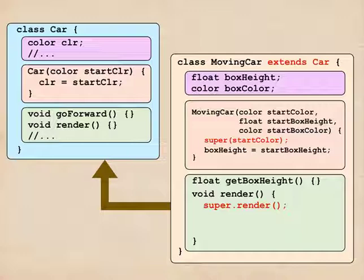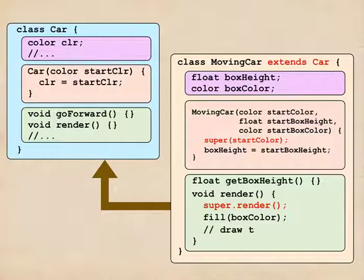If it took any arguments, we'd put them in here. Now this will invoke car's version of render, drawing a car on the screen. And once the car is up there, all I have to do now is choose the box's color for filling and draw the box.